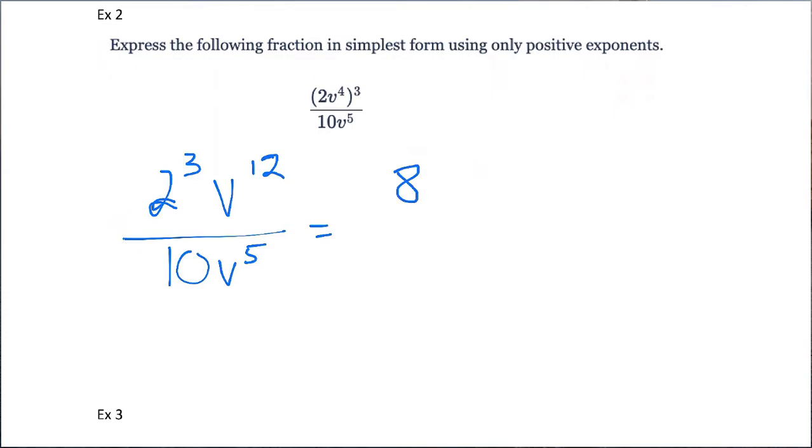In the end, we have, in simplest form, so we're going to want to write this as 4 fifths, if we reduce that fraction, v to the 7th, and we can leave it like that. Positive exponents, simplest form.